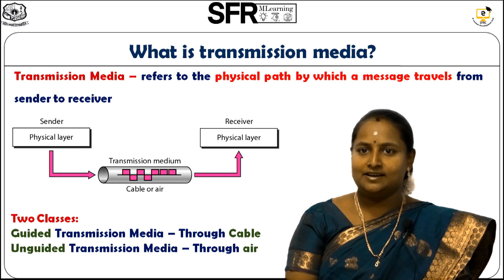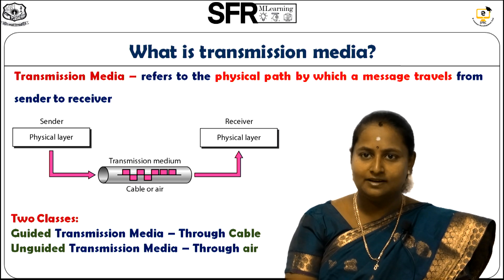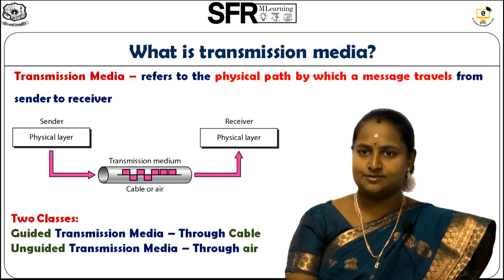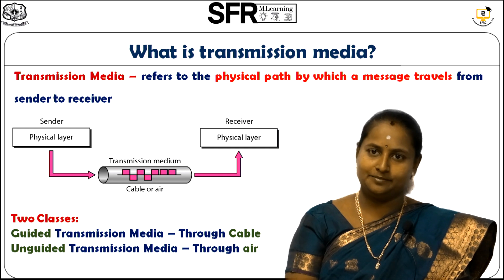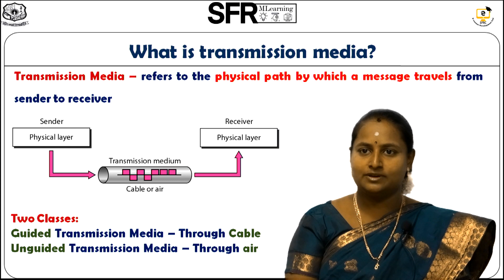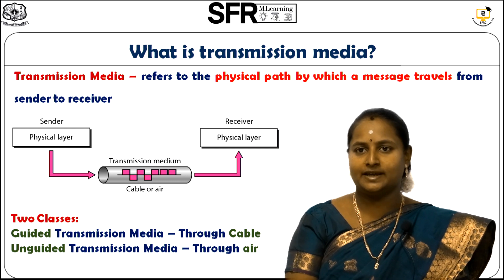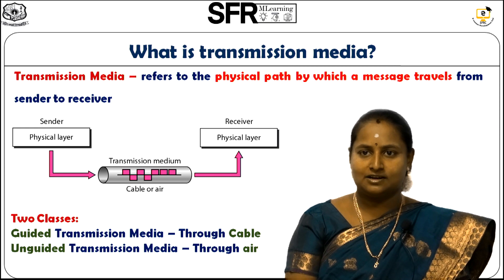As clearly described in the diagram, the sender exists on the left side and the receiver on the right side. For the sender and receiver to communicate, there is a need for a transmission medium. In transmission medium, there are two classes: guided and unguided. Guided transmission medium means the transmission occurs through cable — that is, the network exists through physical cables. Unguided means the transmission occurs through air, that is through signals.